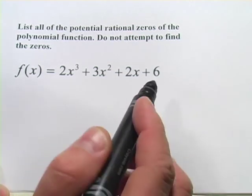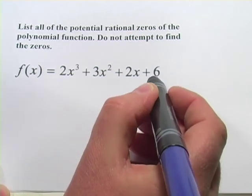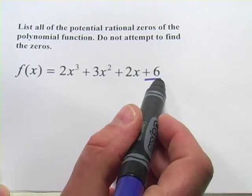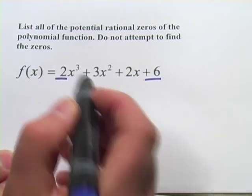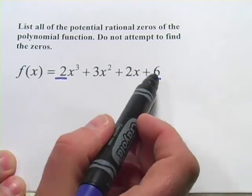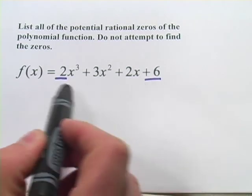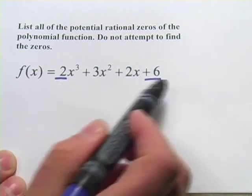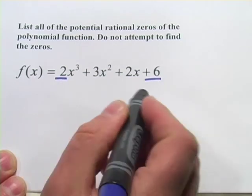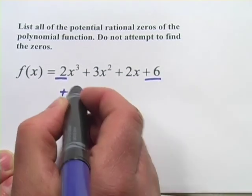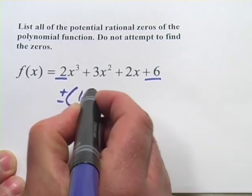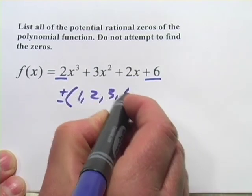Remember to do that with this rational zero theorem, we take the factors of the constant term over the coefficient of the highest term. So it's going to be the factors of 6 over 1 and the factors of 6 over 2. Well, the factors of 6 over 1 would be, and we should do positive and negative here, 1, 2, 3, and 6.